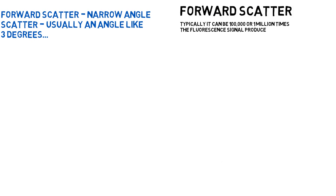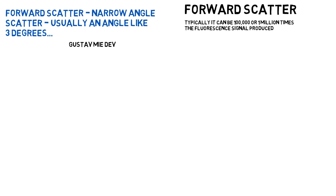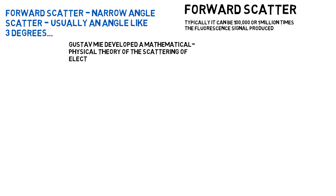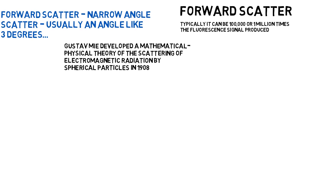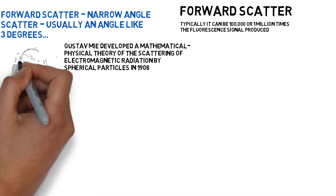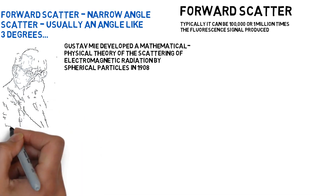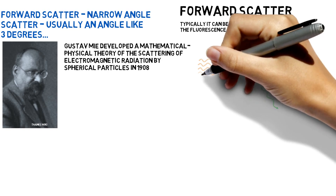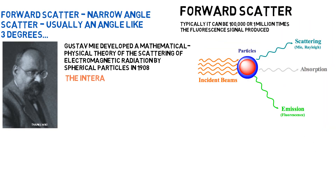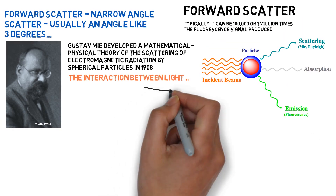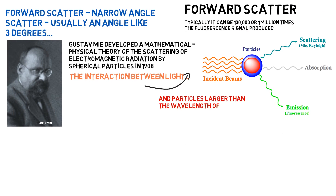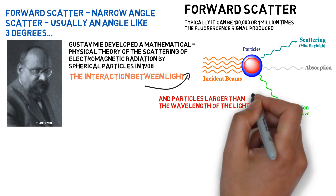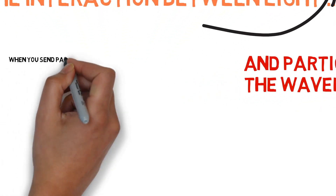Our knowledge of light scatter is heavily derived from the work of Gustav Mie, who developed Mie theory in 1908 as a mathematical physical theory of the scattering of electromagnetic radiation by spherical particles from about one-tenth the wavelength of light to several microns. Mie theory operates from around 10 nanometers to about 10,000 nanometers, or 10 micron spheres.